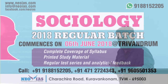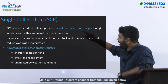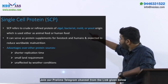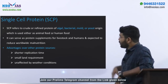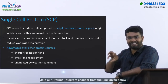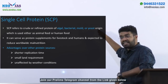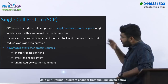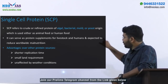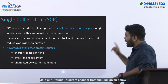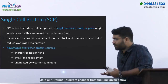Single cell protein refers to crude or refined protein of algal, bacterial, mold, or yeast origin — mold meaning fungal origin. It is purely from these kinds of microorganisms — algae, bacteria, fungus, or yeast — and is used either as animal feed or human food. It can serve as protein supplements for livestock as well as humans, and is expected to reduce worldwide malnutrition.